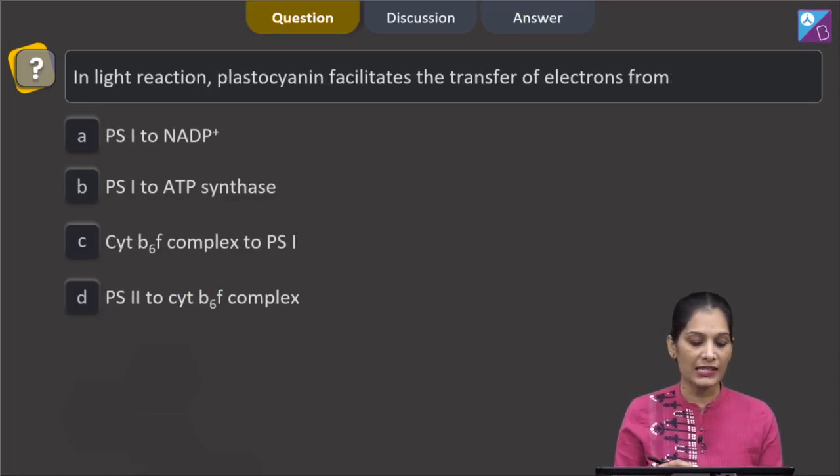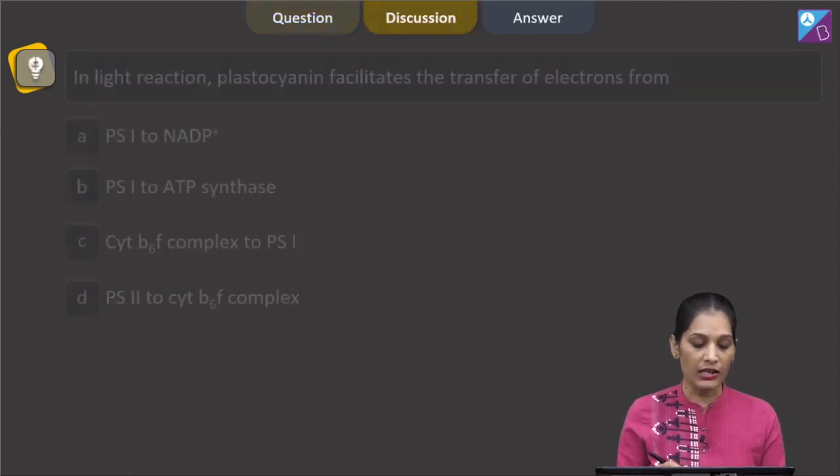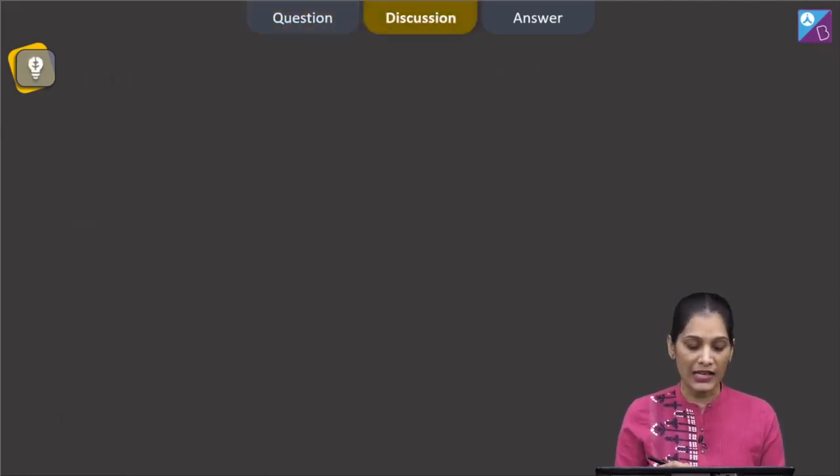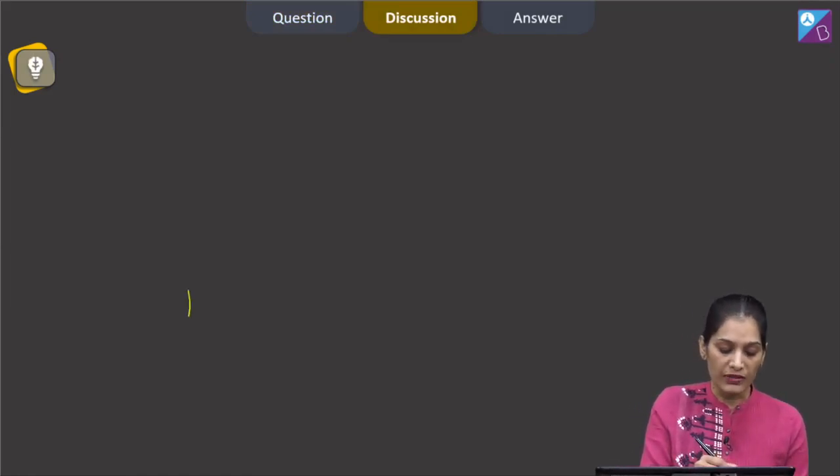Next question says, in light reaction, plastocyanin facilitates the transfer of electrons from PS1 to NADP+, PS1 to ATP synthase, cytochrome B6F complex to PS1, or PS2 to cytochrome B6F complex. So this question is talking about the light reaction in photosynthesis. If you remember the Z scheme,